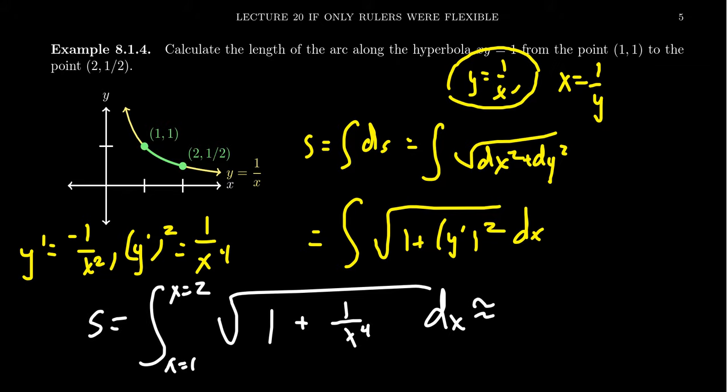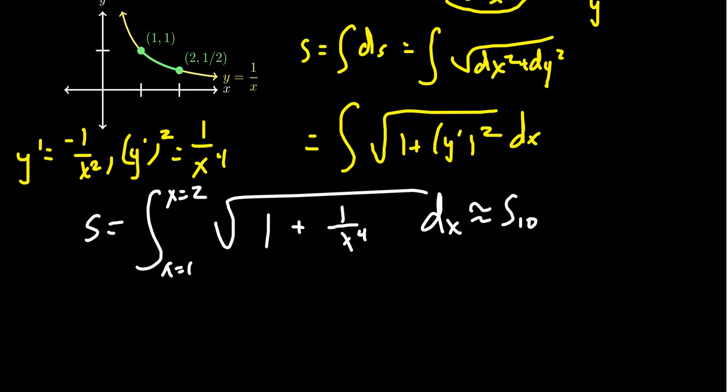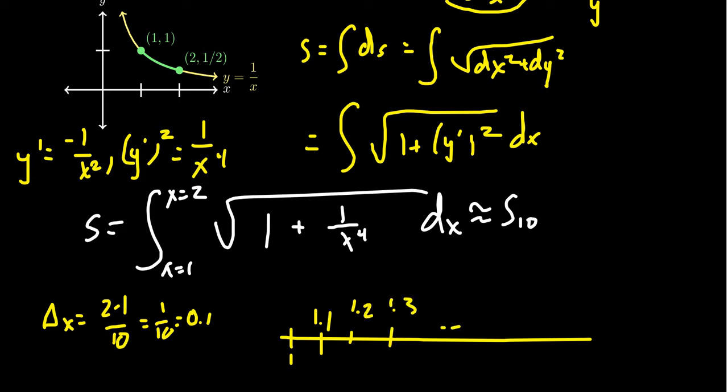We're going to approximate this using Simpson's rule with 10 subdivisions. If we do it by hand we'd calculate Δx which would be (2-1)/10, that is 1/10 or 0.1. And so then we have all of our x's, so we have x₀ which is 1, then the next one would be 1.1, 1.2, 1.3, etc. down to 2.